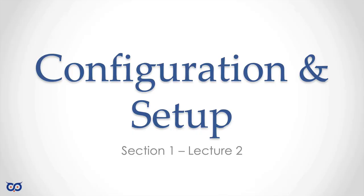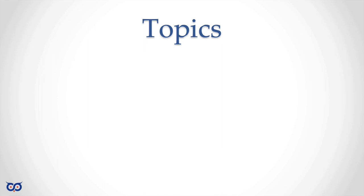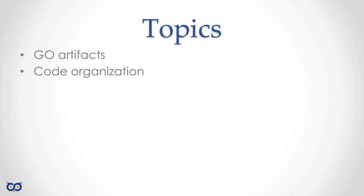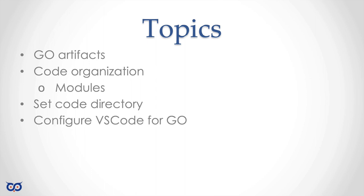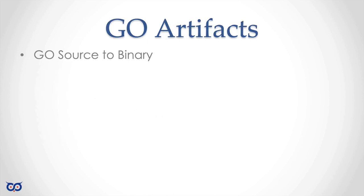Welcome to lecture 2 in section 1. In this lecture we'll go through what you need to do to configure and set up the tools we installed in the previous lecture, so that in the next section we can start writing code. We're going to talk about Go artifacts — your core source files, packages, and executables — and how you get those. We'll also talk about code organization and setting up your code directory.